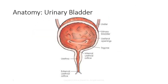Each ureter is approximately 10 to 12 inches, or 25 to 30 centimeters long, and enters the posterior lateral surface of the bladder. It conveys urine from the renal pelvis to the bladder via peristaltic contractions.